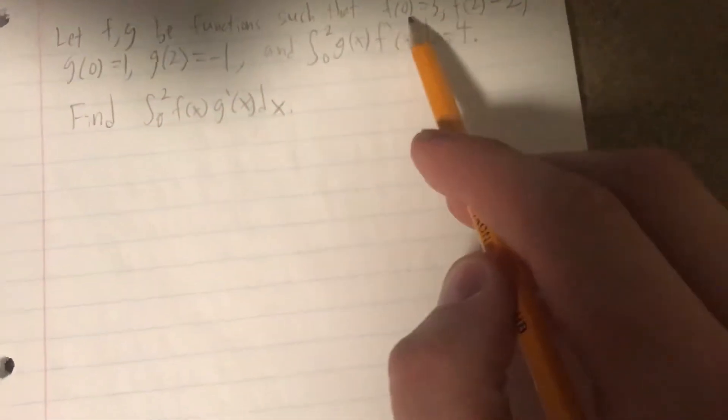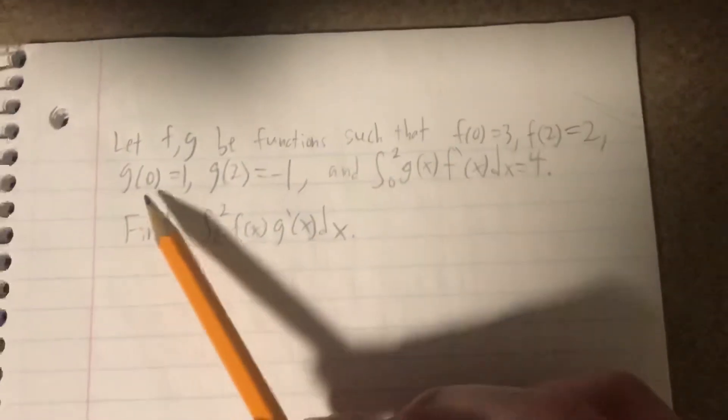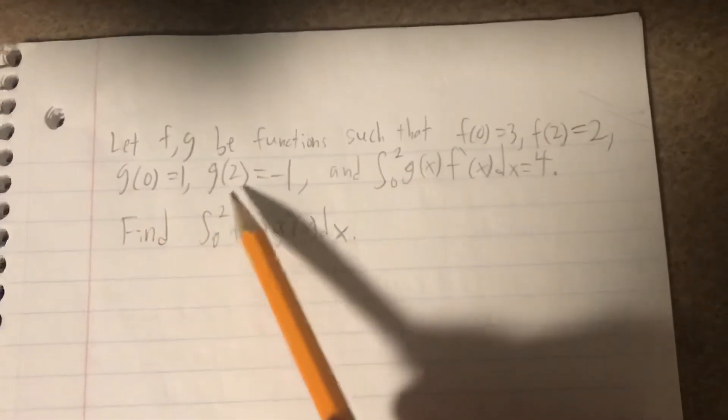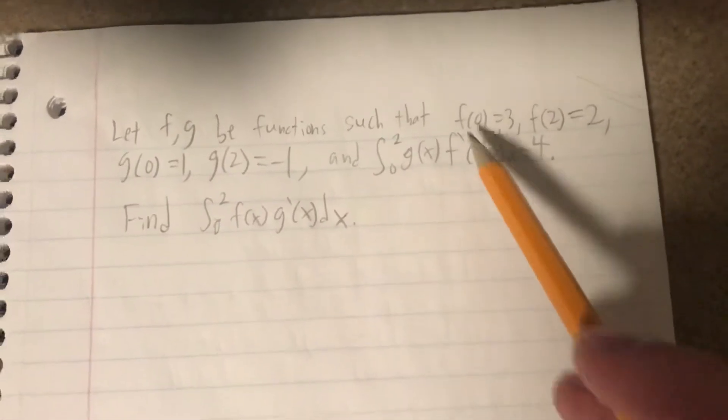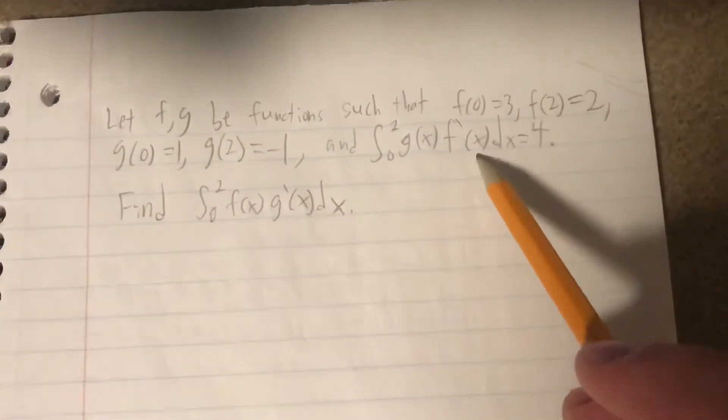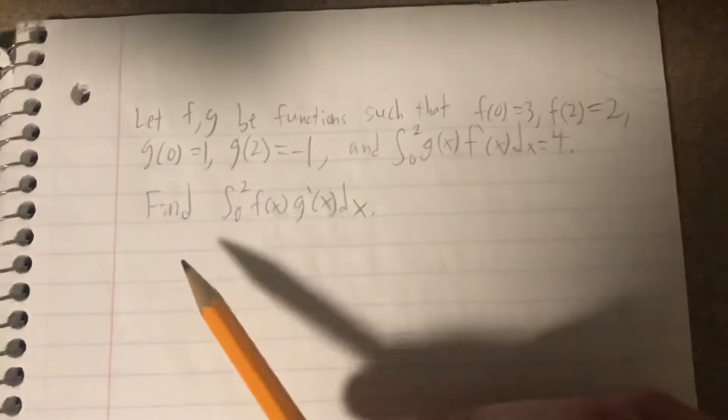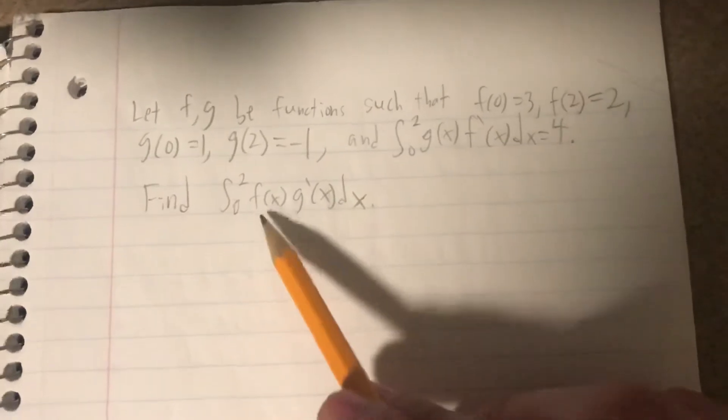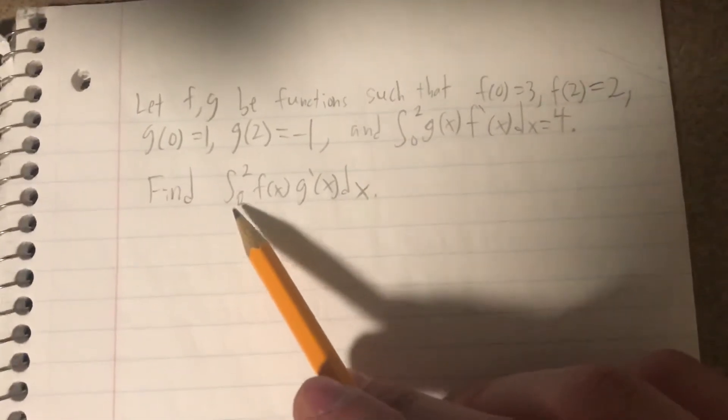let f and g be functions such that f of 0 is 3, f of 2 is 2, g of 0 is 1, g of 2 is negative 1, and the integral of g of x times f prime of x dx is equal to 4, bounded from 0 to 2. Now the question asks, find the integral of f of x times g prime of x from 0 to 2.